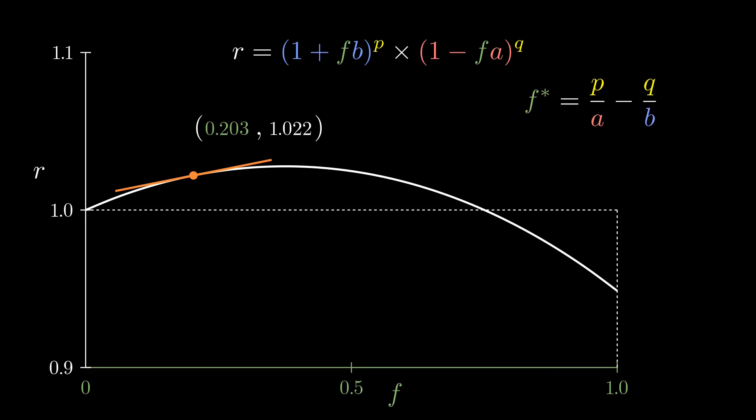This equation tells us at what value of f the curve's peak occurs. Plugging in our values gives 0.375. That's the fraction of wealth we should bet to maximize growth rate. At this fraction, the mode growth rate is 1.028 per coin flip.